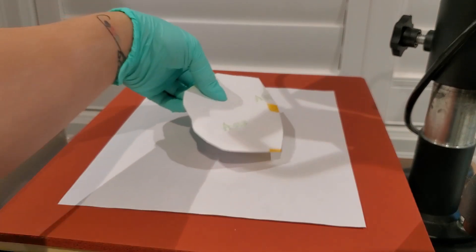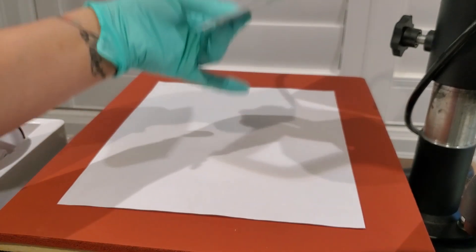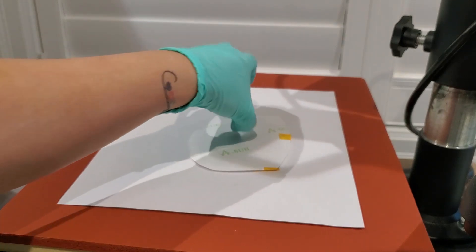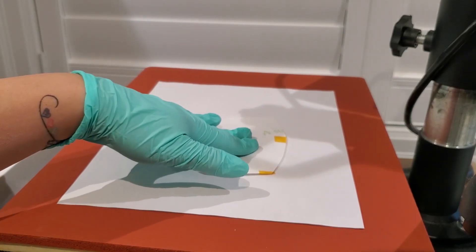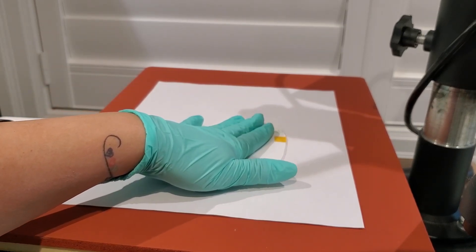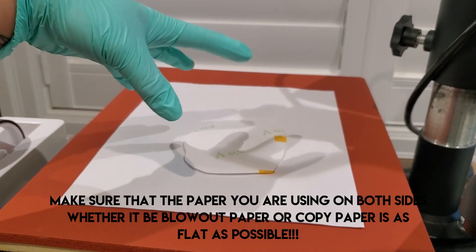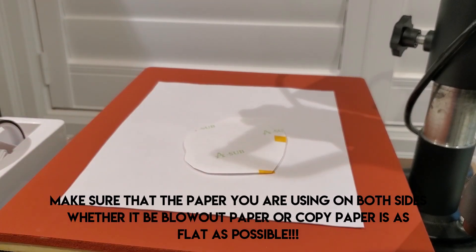Now when you sub, important thing to note, I've already made this mistake. Flat piece of paper that's never been used, paper or your blowout paper, doesn't matter. And then also on top, another piece of flat paper. Do not use burnout paper you've used before. I made that mistake and actually wrinkled my acrylic because it will melt a little bit.